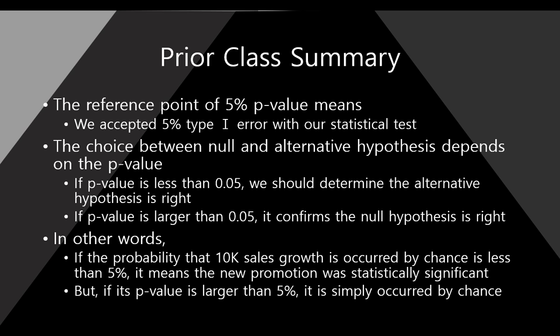In other words, if the probability that 10k sales growth is occurred by chance is less than 5%, it means that the new promotion strategy was very statistically significant. However, if the p-value is larger than 5%, it means that the event, the 10k sales growth, is just simply occurred by chance.